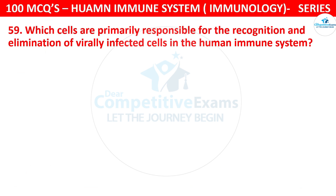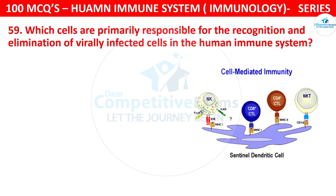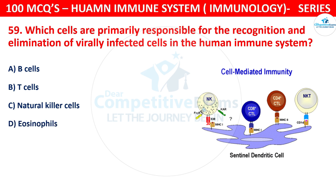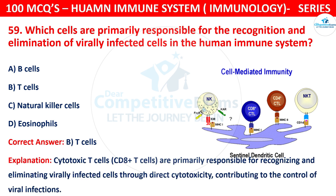Question number 59. Which cells are primarily responsible for the recognition and elimination of virally infected cells in the human immune system? The options are B cells, T cells, natural killer cells, or eosinophils. The correct answer is B, that is T cells. Cytotoxic T cells, CD8+ T cells, are primarily responsible for recognizing and eliminating virally infected cells through direct cytotoxicity, contributing to the control of viral infections.